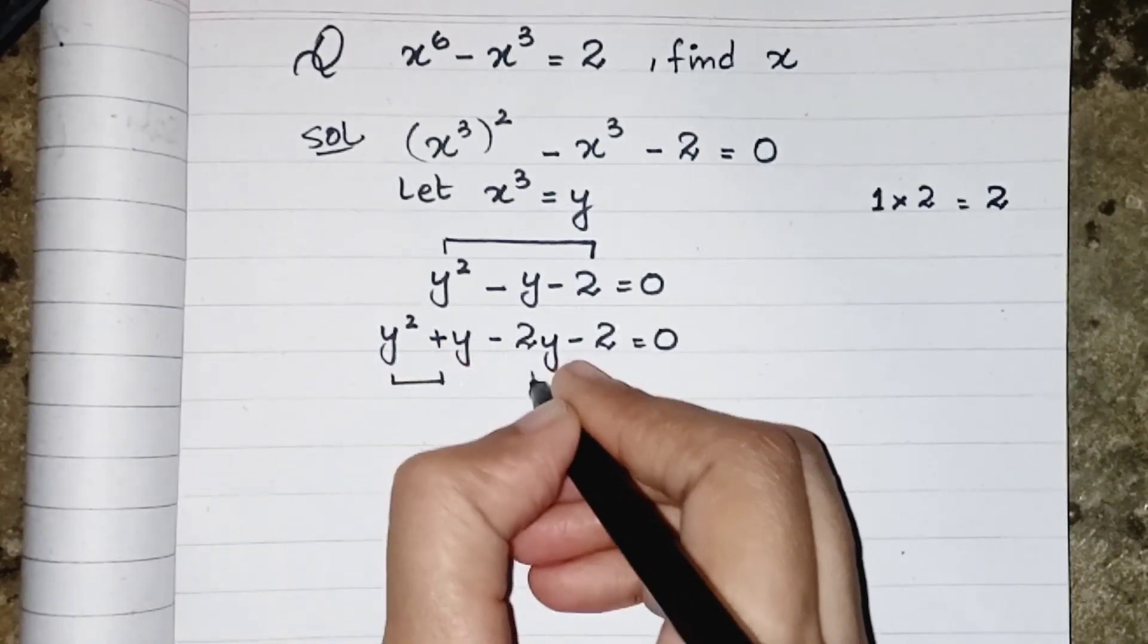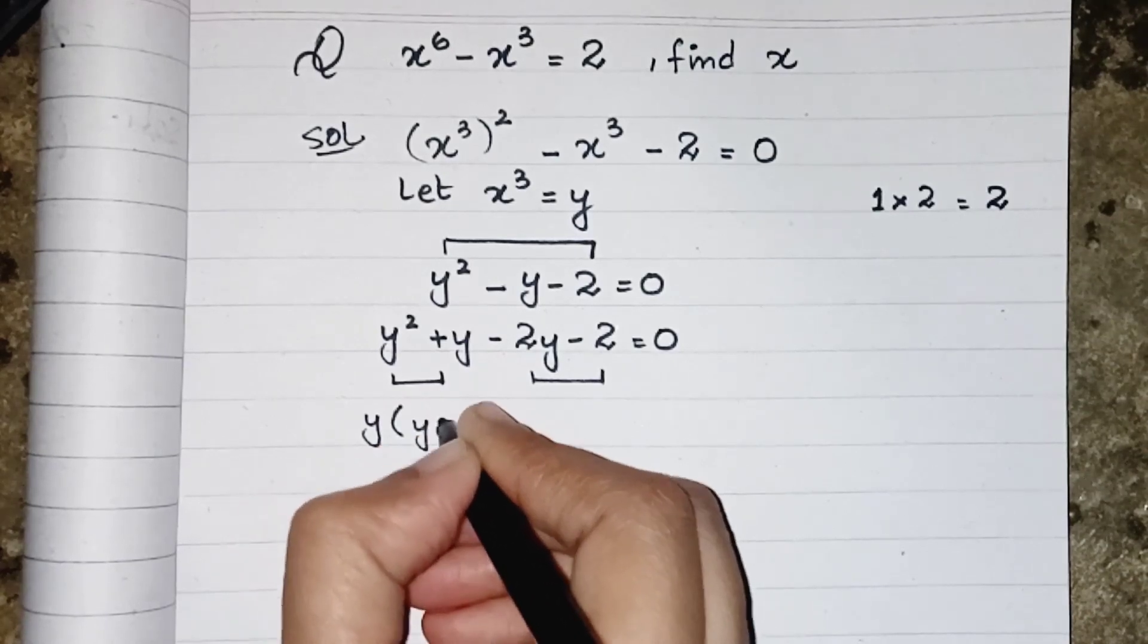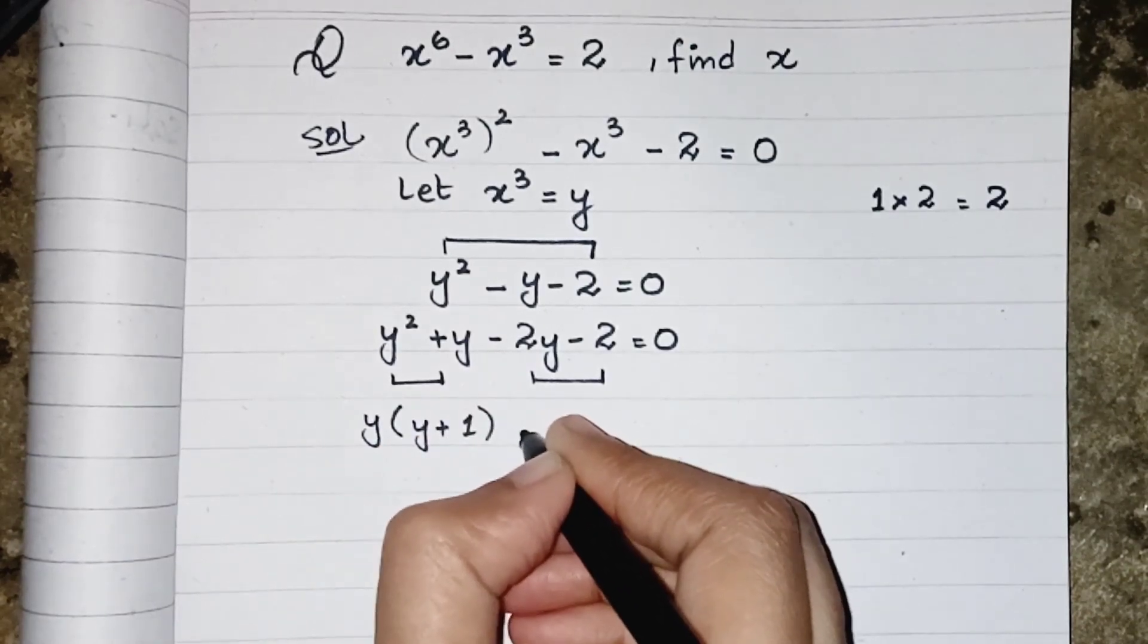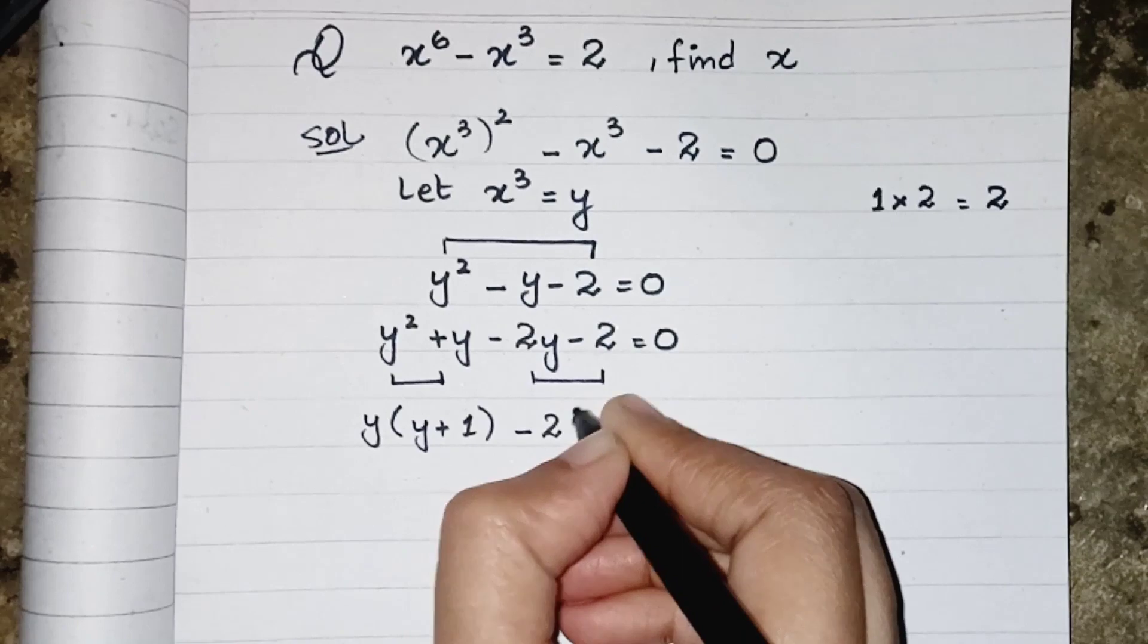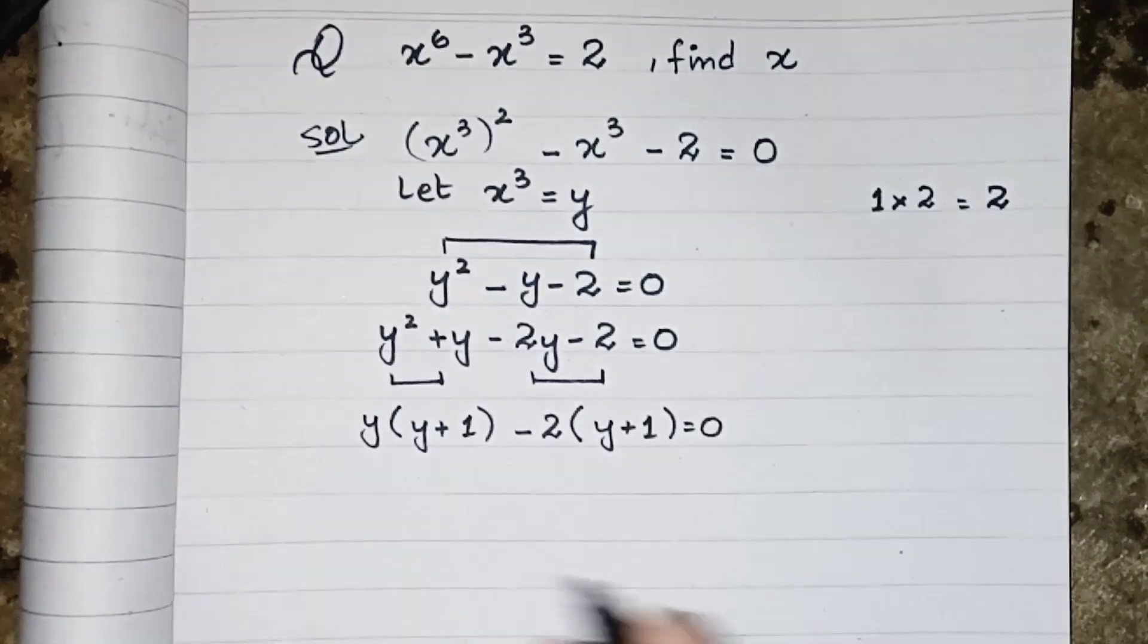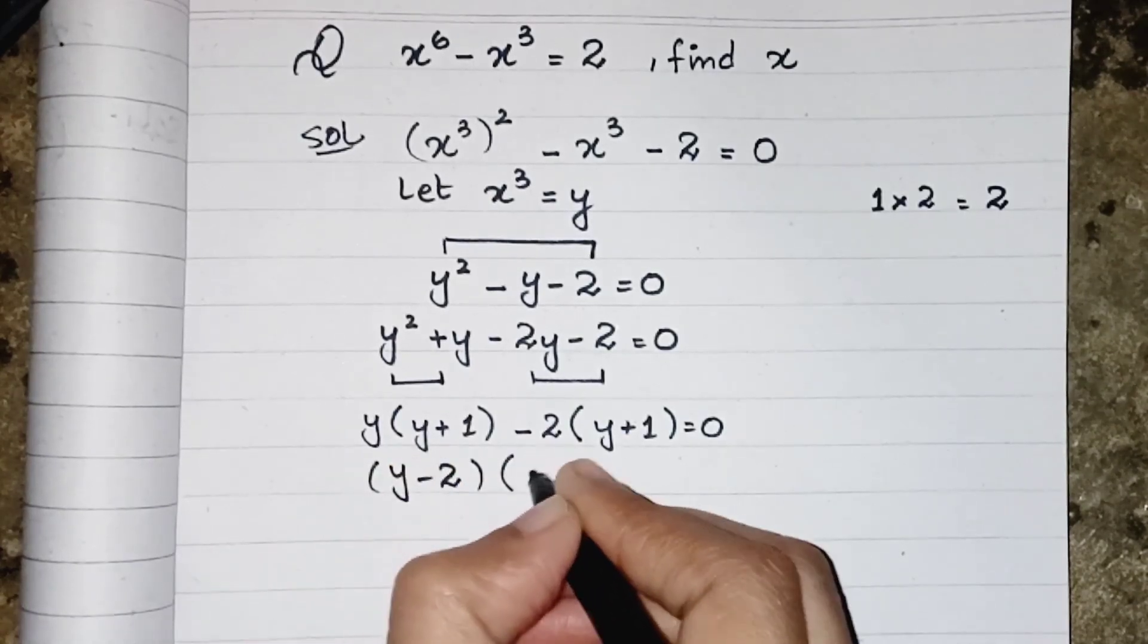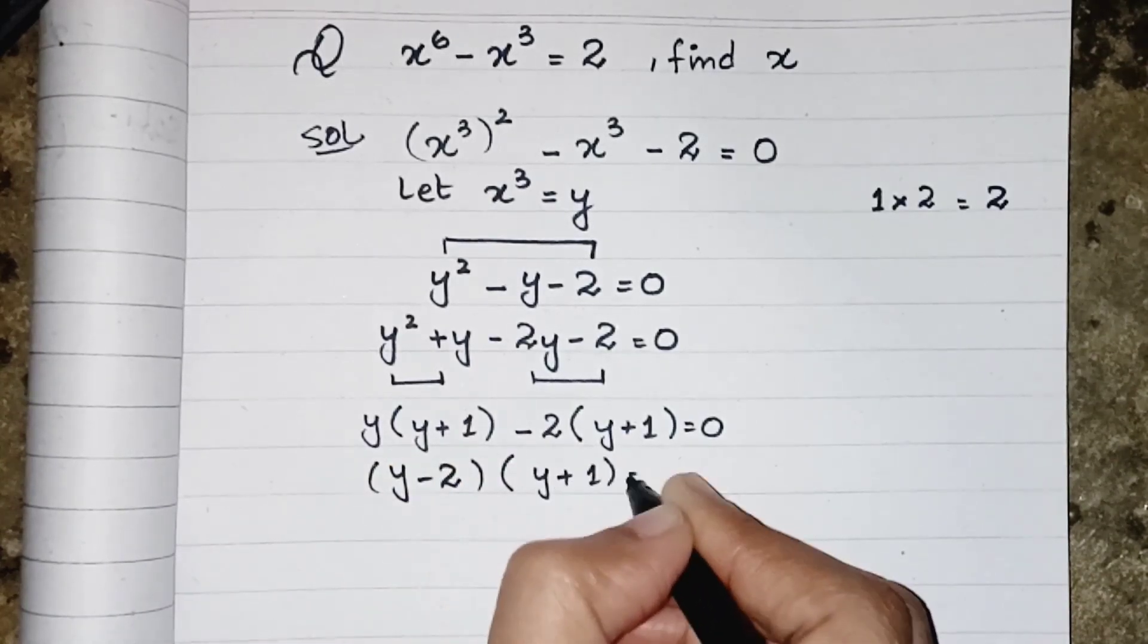Now we have to take common from first 2 and last 2. In first 2 we have y and then the remaining one is y plus 1. In the last 2 we have common minus 2, y plus 1 equals to 0. y minus 2 in one bracket and y plus 1 equals to 0.